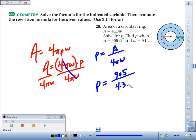So it's just a matter of plugging and chugging. In the denominator, 4 times 3.14 times 9, I get 113.04. So we're going to do 905 divided by 113.04.